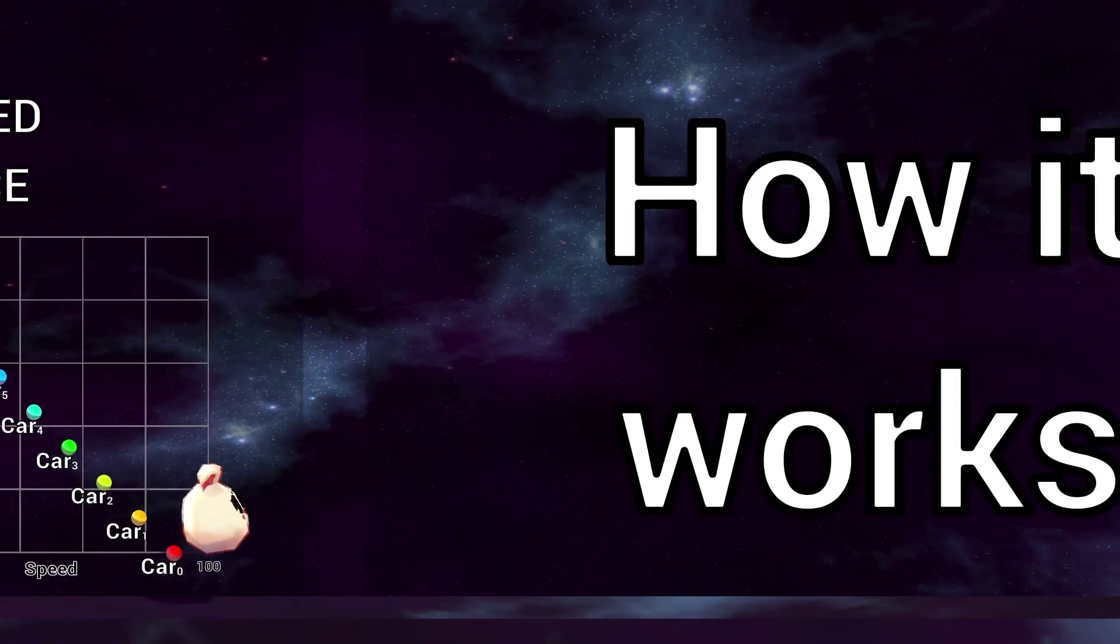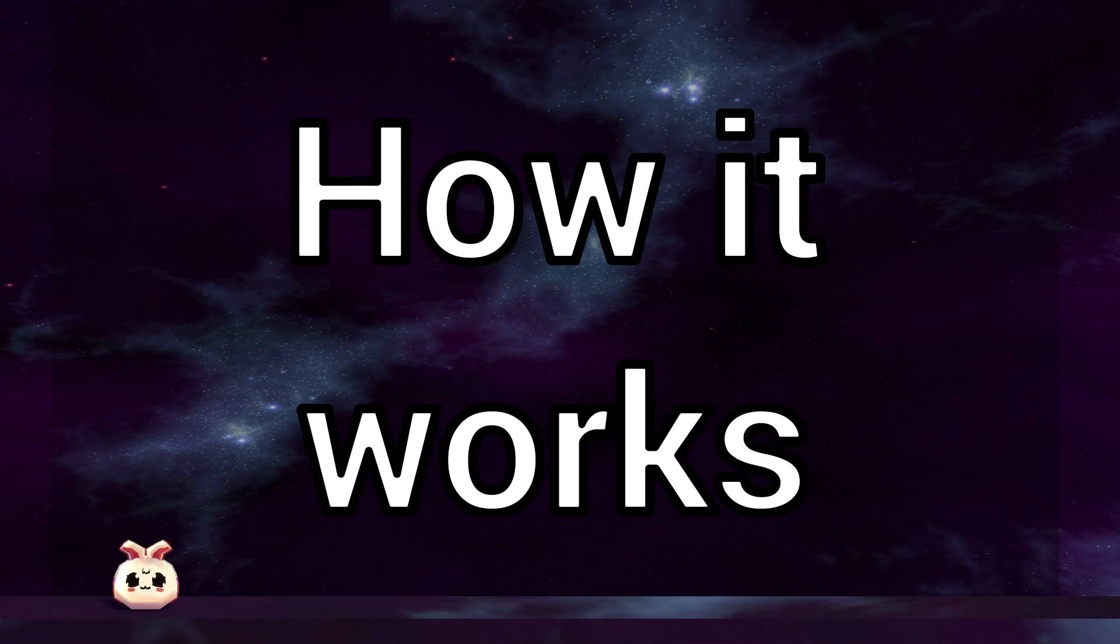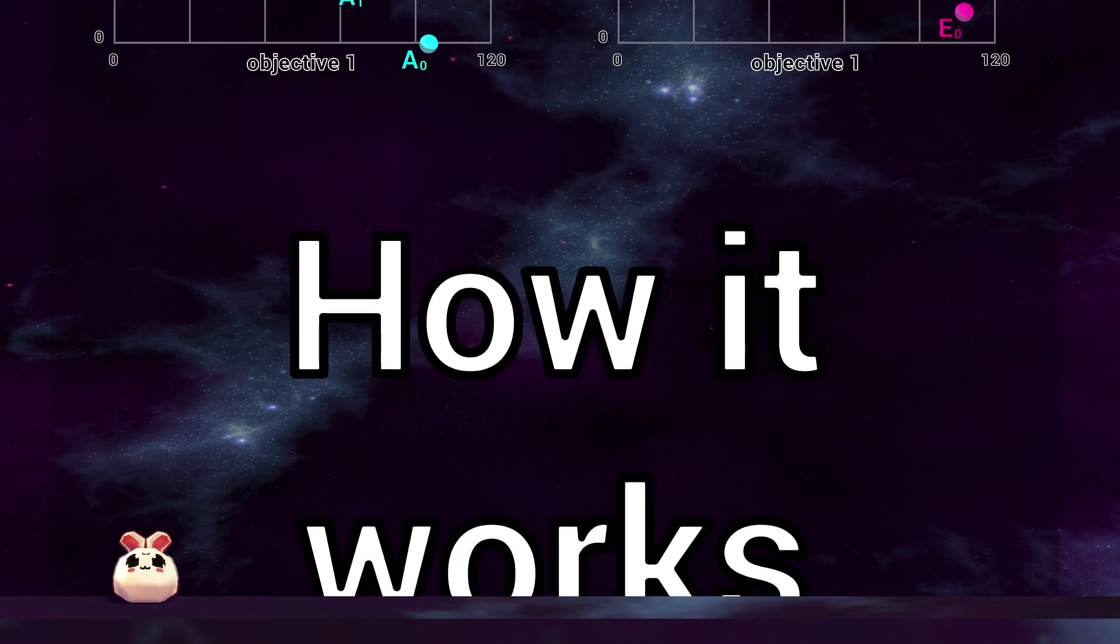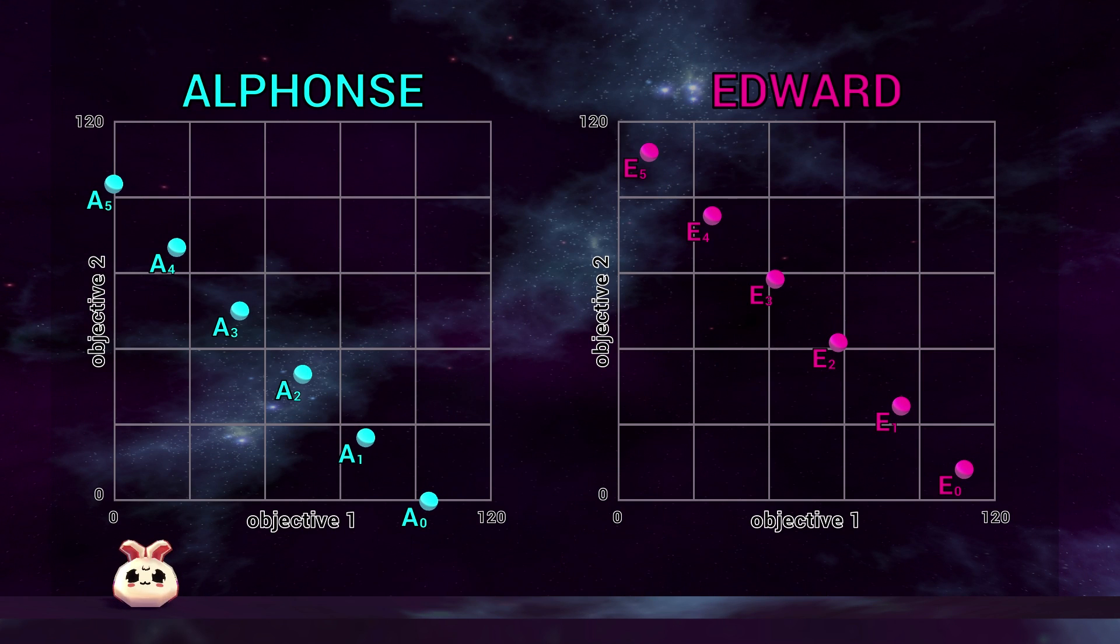Let's work through an example. Here we have solution sets from two made-up algorithms named Alphonse and Edward. A quick reminder that we're doing minimization, so smaller objective values are better, so the closer the solutions are to the bottom left of our plots, the better they are. We can see by eye that Alphonse has achieved better proximity in its solution set, so all solutions offer better objective values.